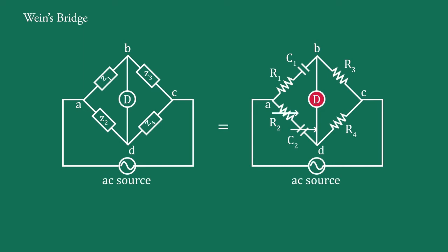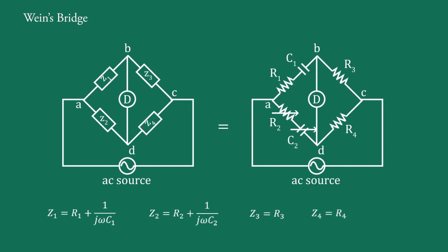Here, the detector is either a pair of headphones or a null detector. This is an AC source. It measures capacitance C1 in terms of standard capacitor C2 and two resistances R3 and R4. We assume that the condensers are without losses and all the resistances are perfectly non-reactive. Comparing the components of this bridge with the basic bridge, we find that Z1 = R1 + 1/(jωC1), Z2 = R2 + 1/(jωC2), Z3 = R3, and Z4 = R4.